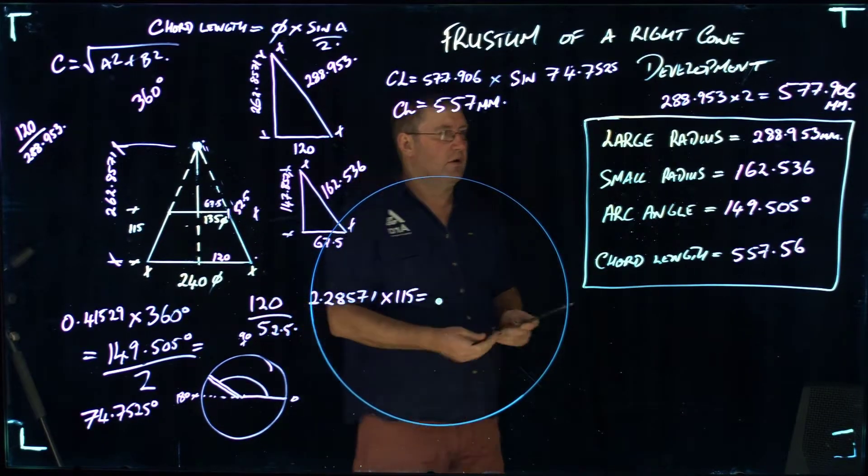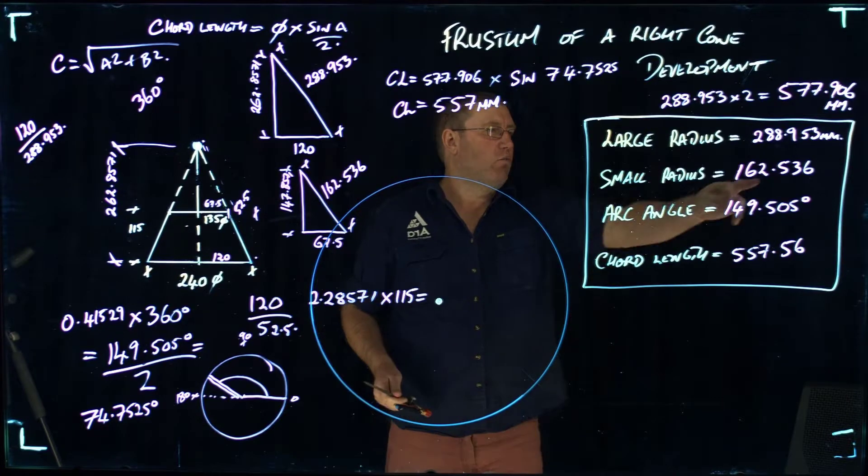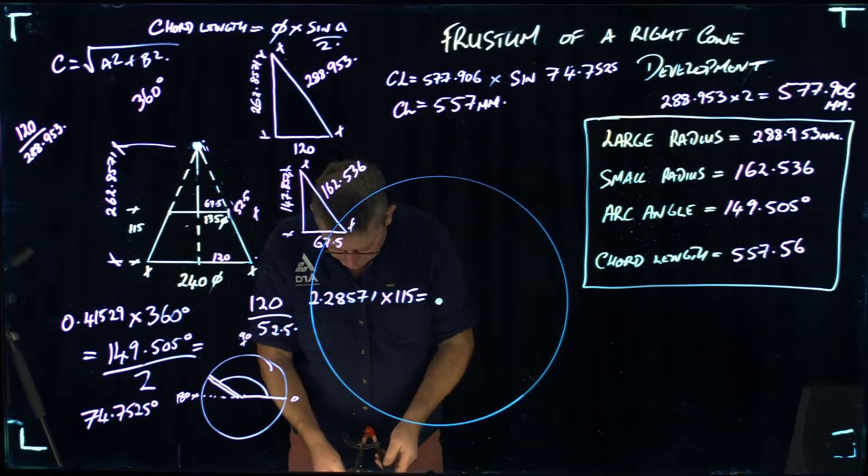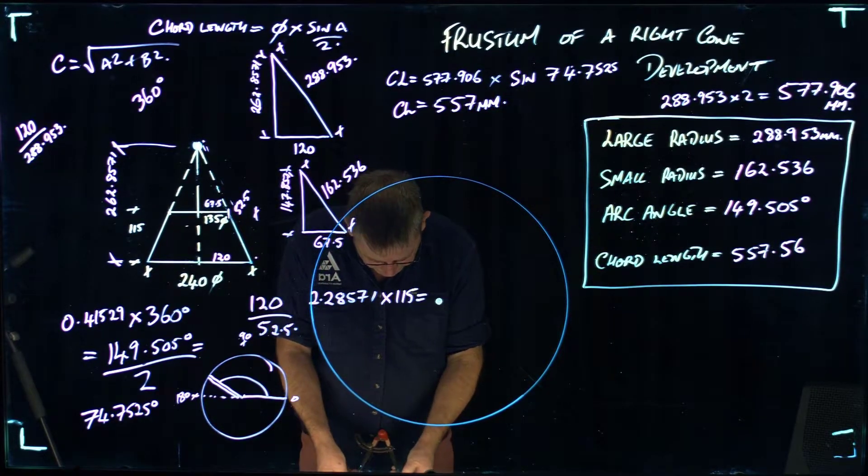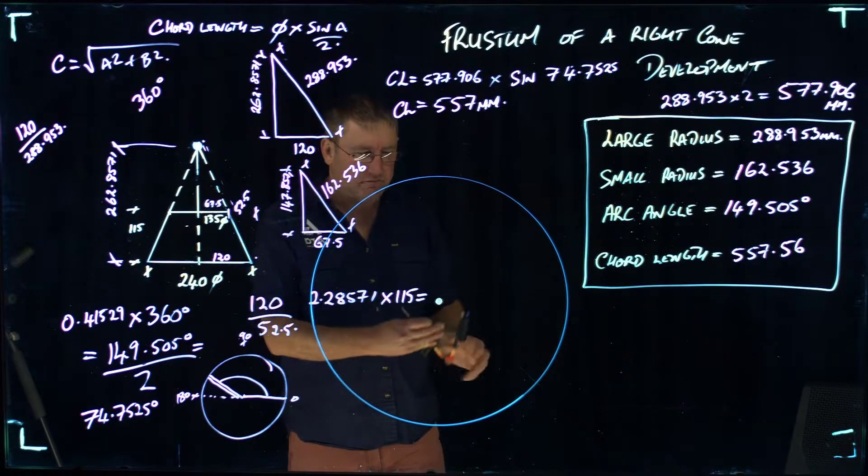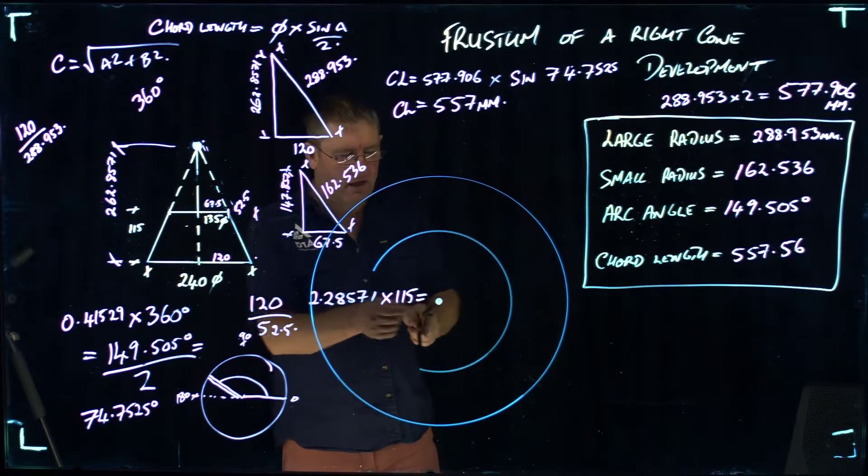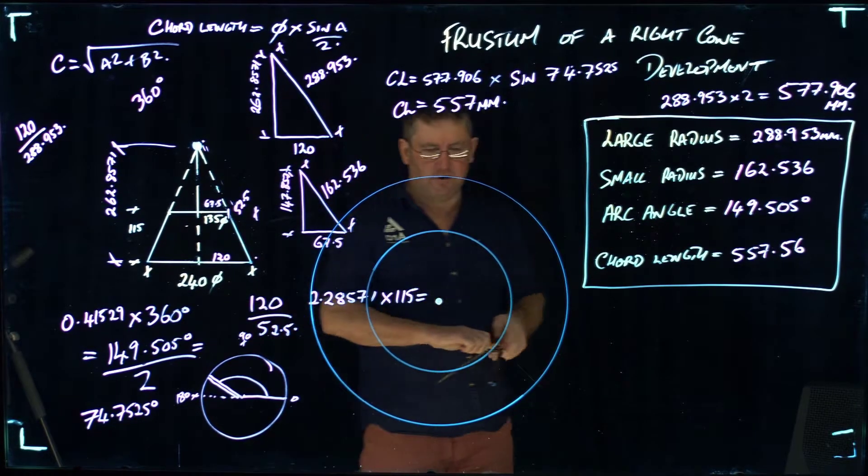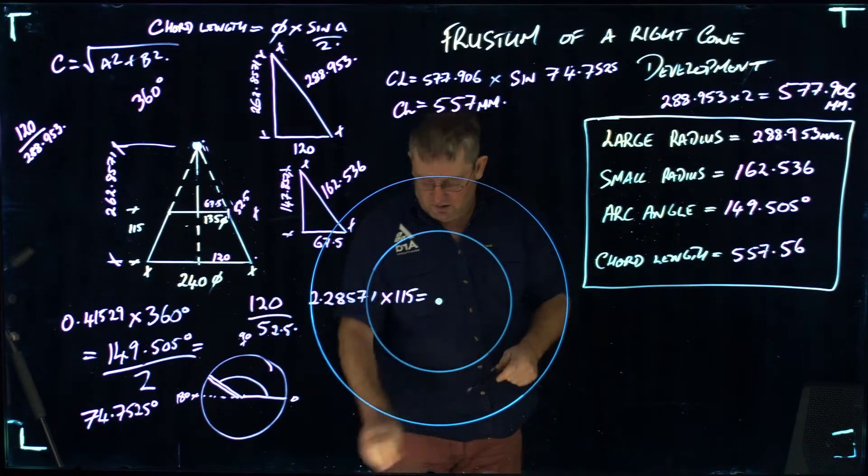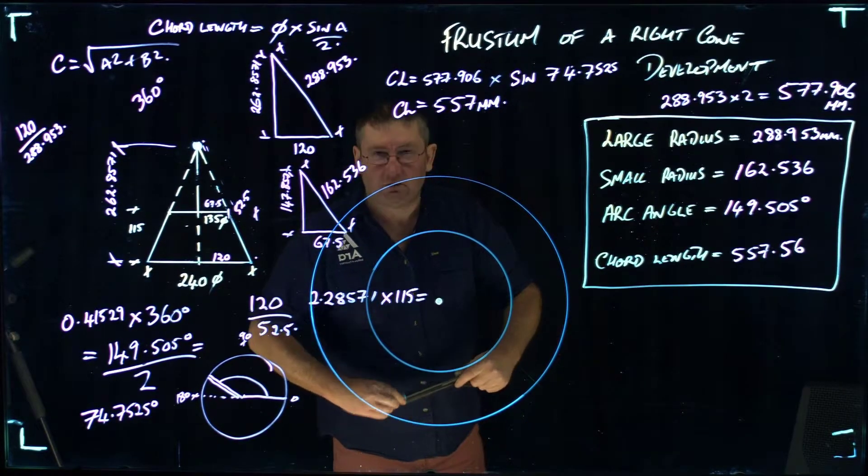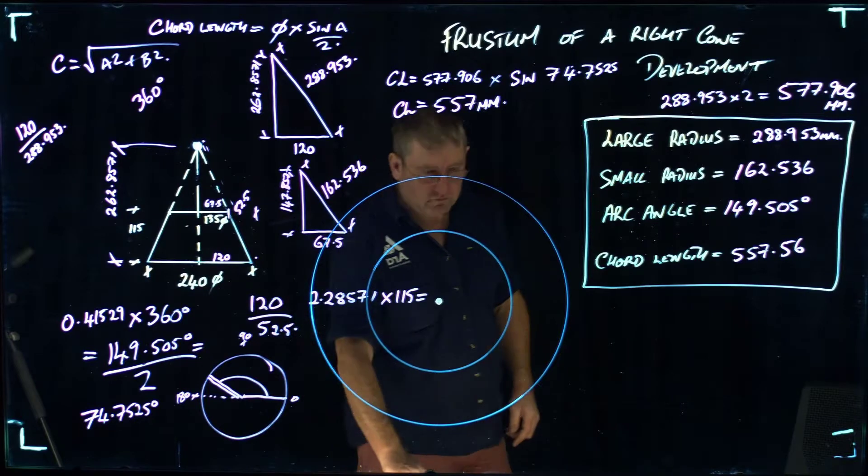There's my circle. I want my small radius here of 162.5. Draw the full circle again. Full circle being, obviously 360 degrees.